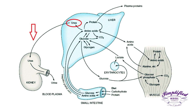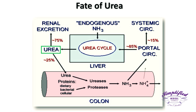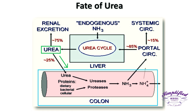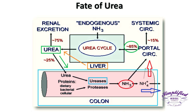Urea formed in the liver passes into the blood and is transported to the kidneys, where it is filtered and excreted in the urine. A portion of the urea diffuses from the blood into the intestine, where it is decomposed by intestinal bacterial urease into carbon dioxide and ammonia. This ammonia is partly lost in the feces and is partly reabsorbed into the blood through the portal circulation.